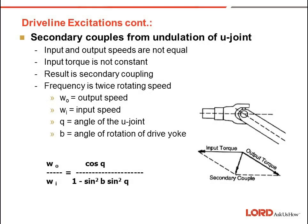Secondary couples come from undulations of U-joints in the drivelines. That is a result of the input and output speeds not being equal, with the U-joint causing some noise. The input torque is not constant, resulting in a secondary coupling issue. The frequency is twice the rotating speed, with a formula available to calculate that. Every internal combustion engine has a firing pulse as each cylinder fires, putting an impulse into the system — similar to a single degree of freedom system — based on the crankshaft turning as each piston fires.